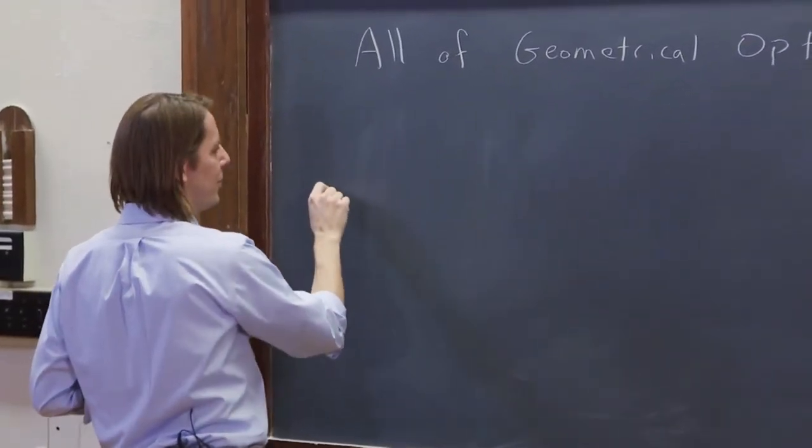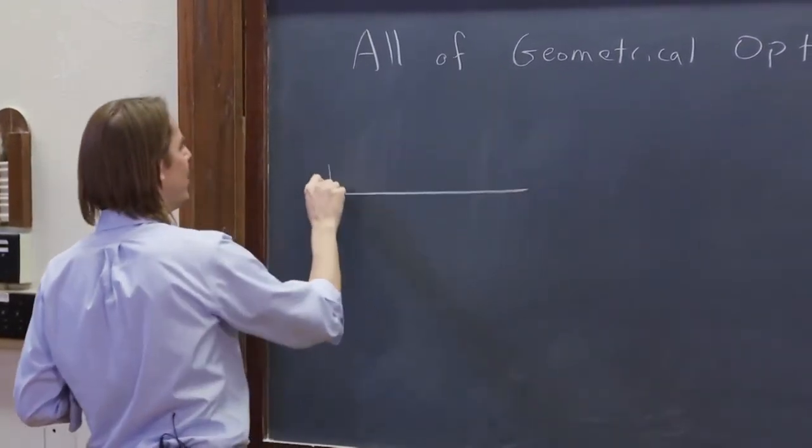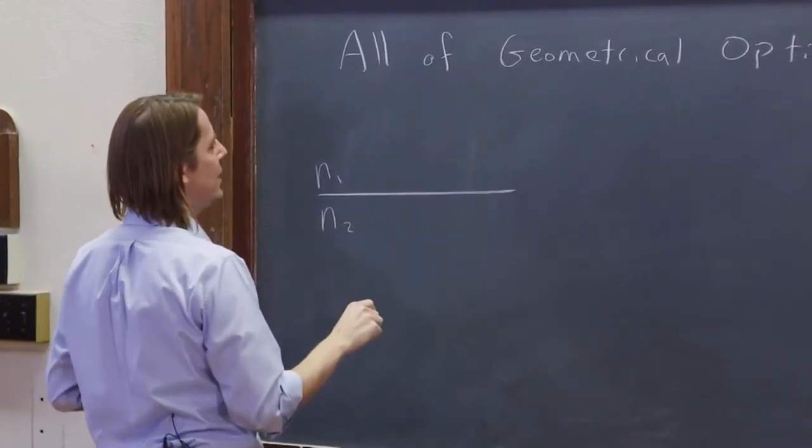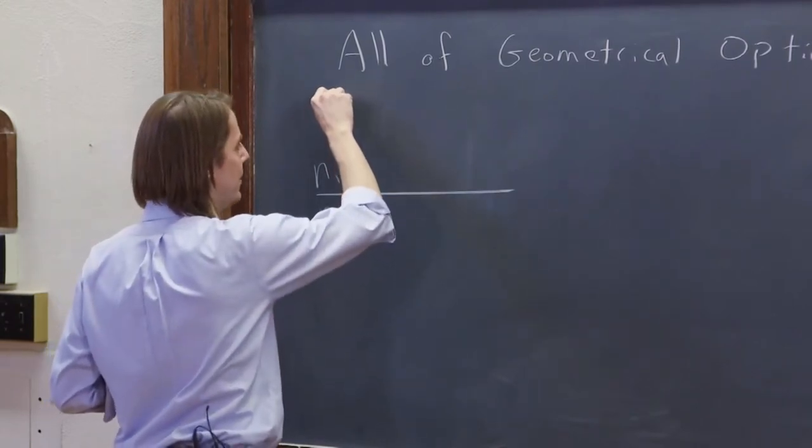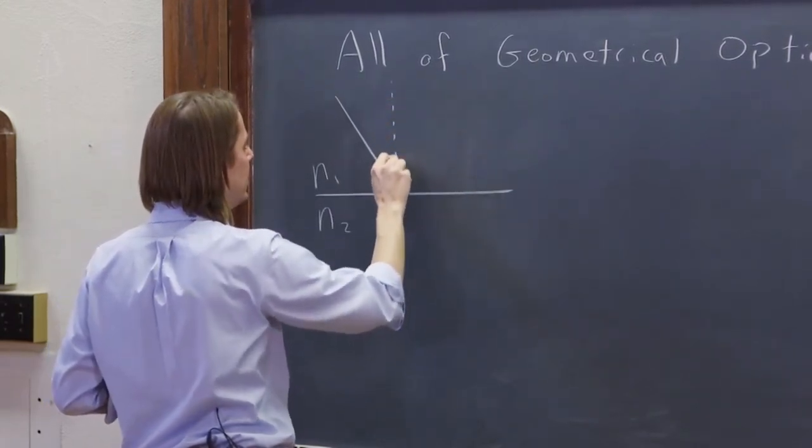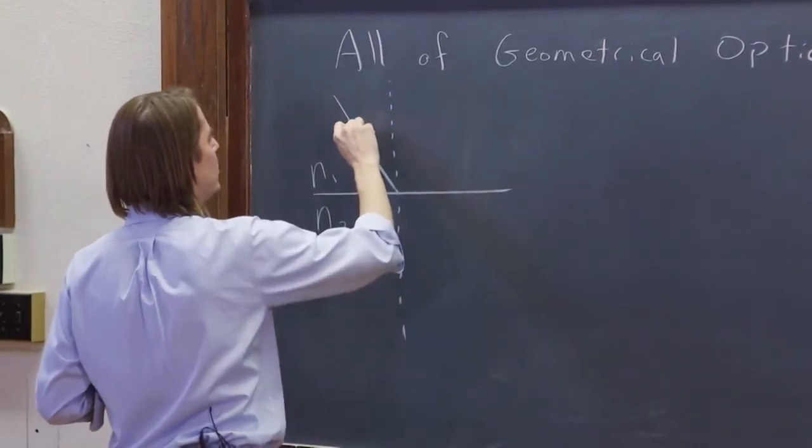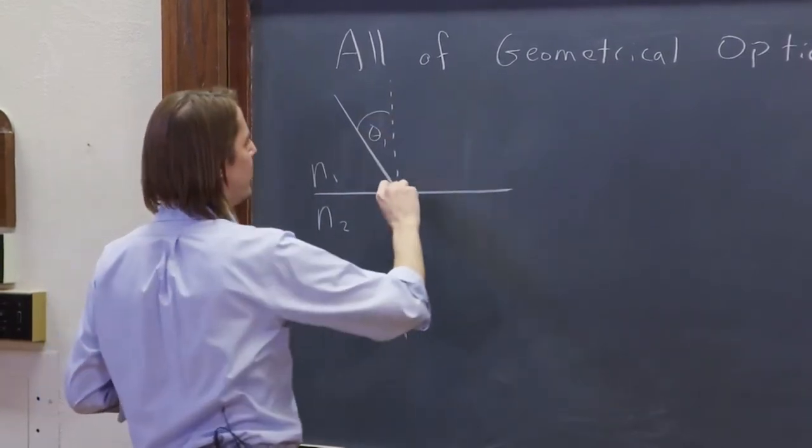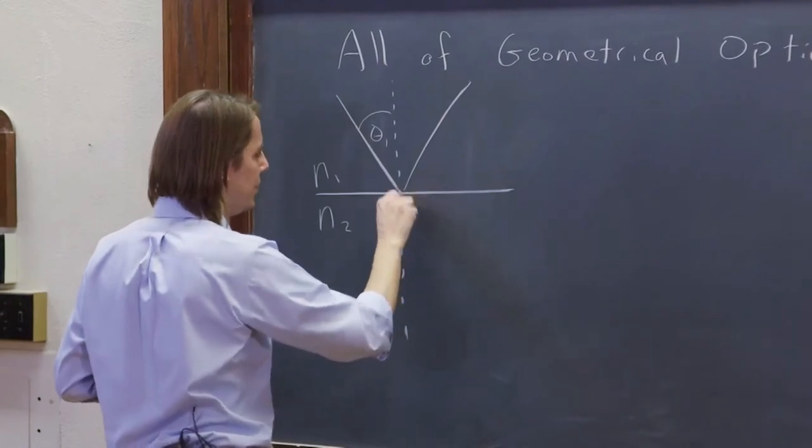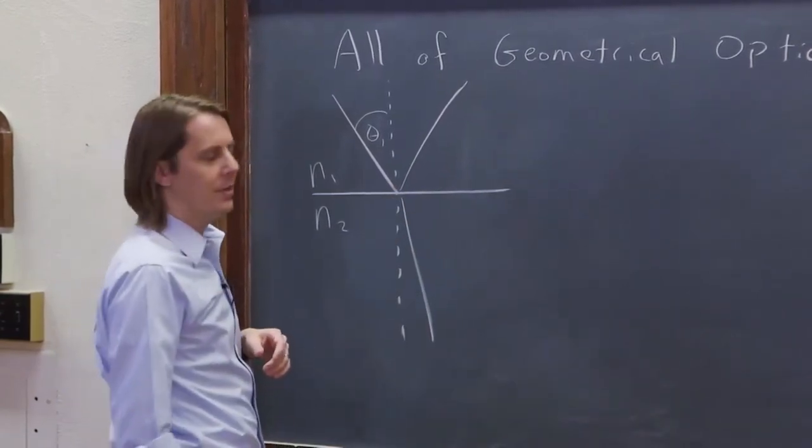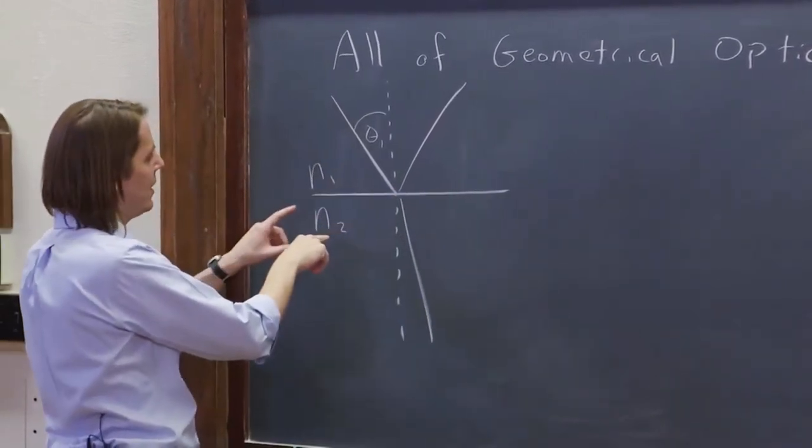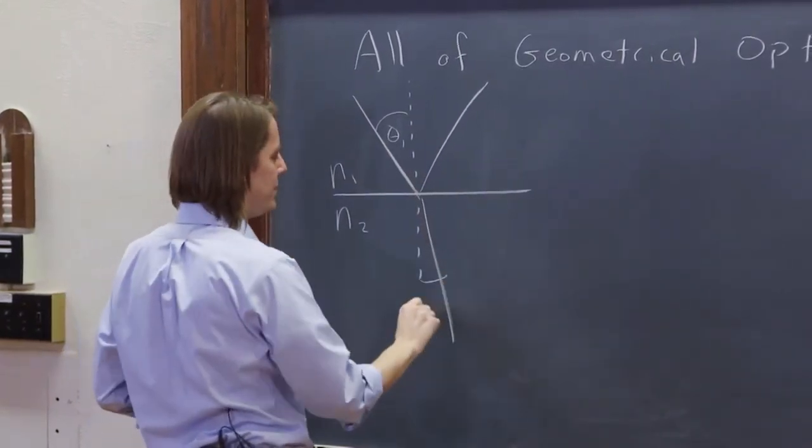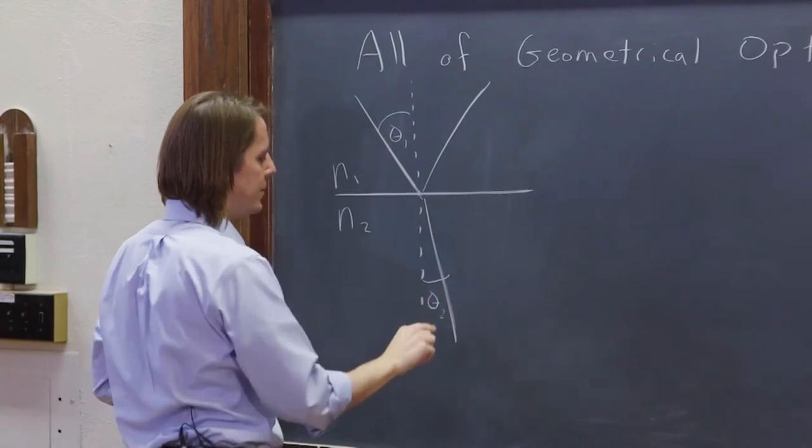And those laws center around this thing we had before where you have light in one medium, in one, and light at an interface to another medium in two, and we know the light comes in some angle to the normal. Call it theta one. And it reflects, and some of it is transmitted into N2. So the way I've drawn it here, N2 has a higher index than N1 because the light sort of fell towards the normal. So this is theta two.